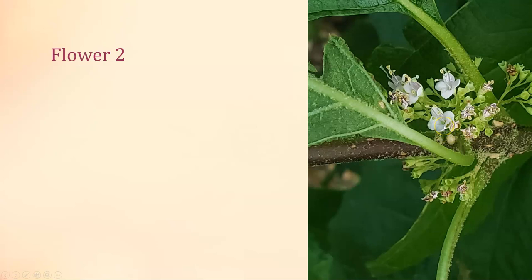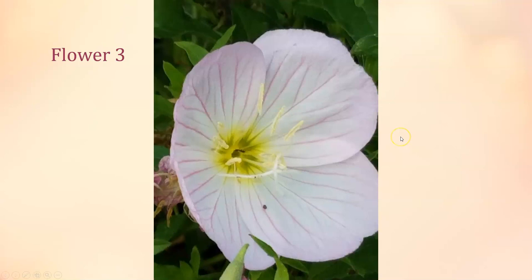Next up is one of my favorite wildflowers, starting to bloom around February or March — it's called showy primrose. Flower number three: showy primrose. Number of petals: four — should be easy to see in the picture.